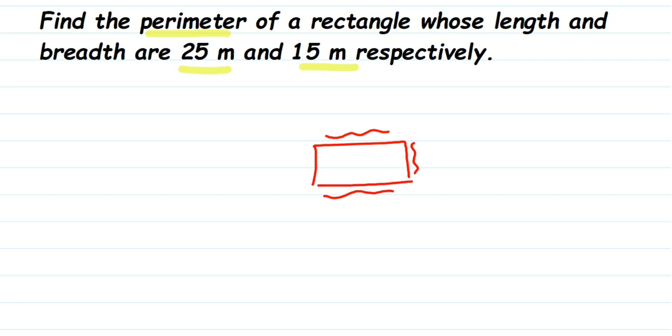Here we have to find out the perimeter of the rectangle. They have given length and breadth, so let's write down what we know from the question. We have given the length, so length is equal to—here the small l represents the length—so l is equal to 25 meters, and b represents the breadth. Small b, it is equal to 15 meters.